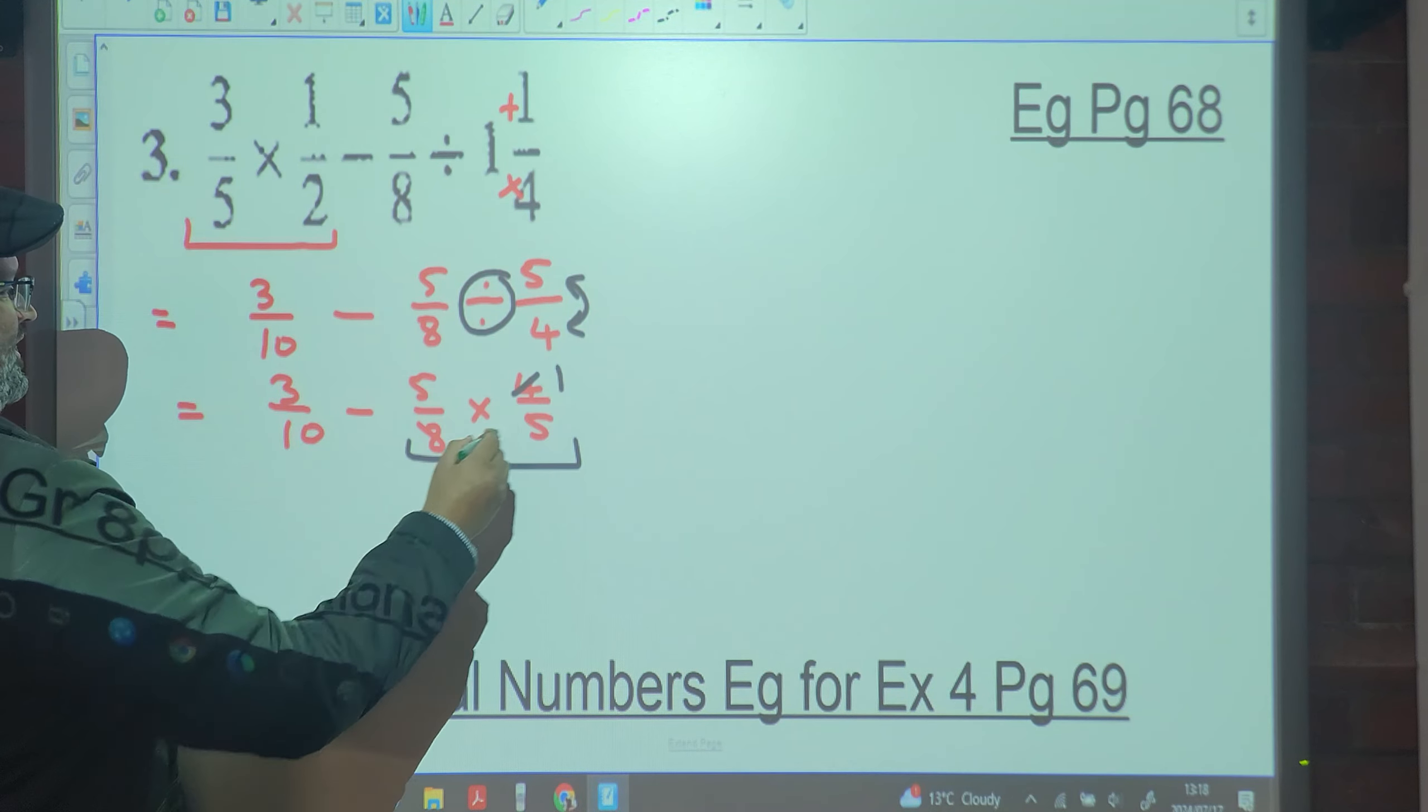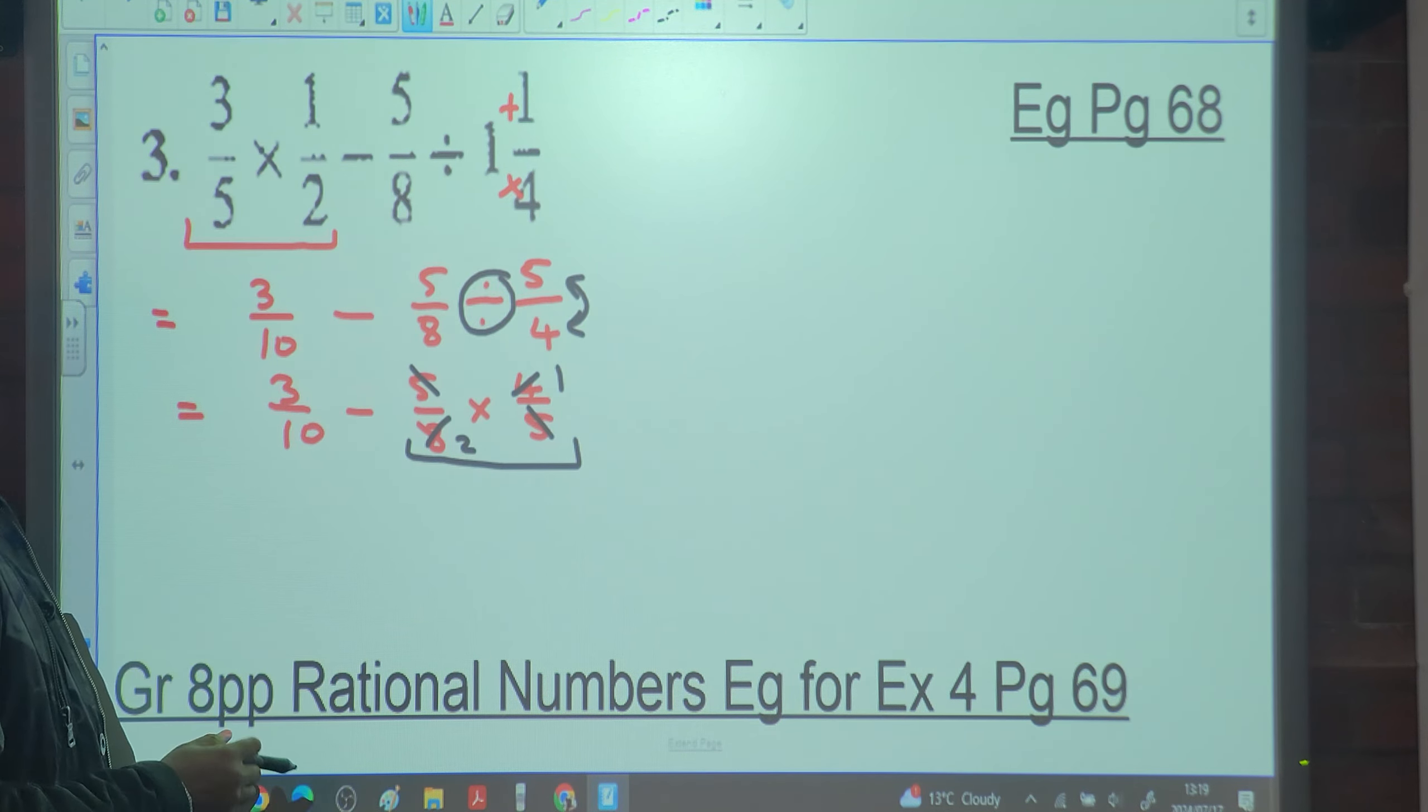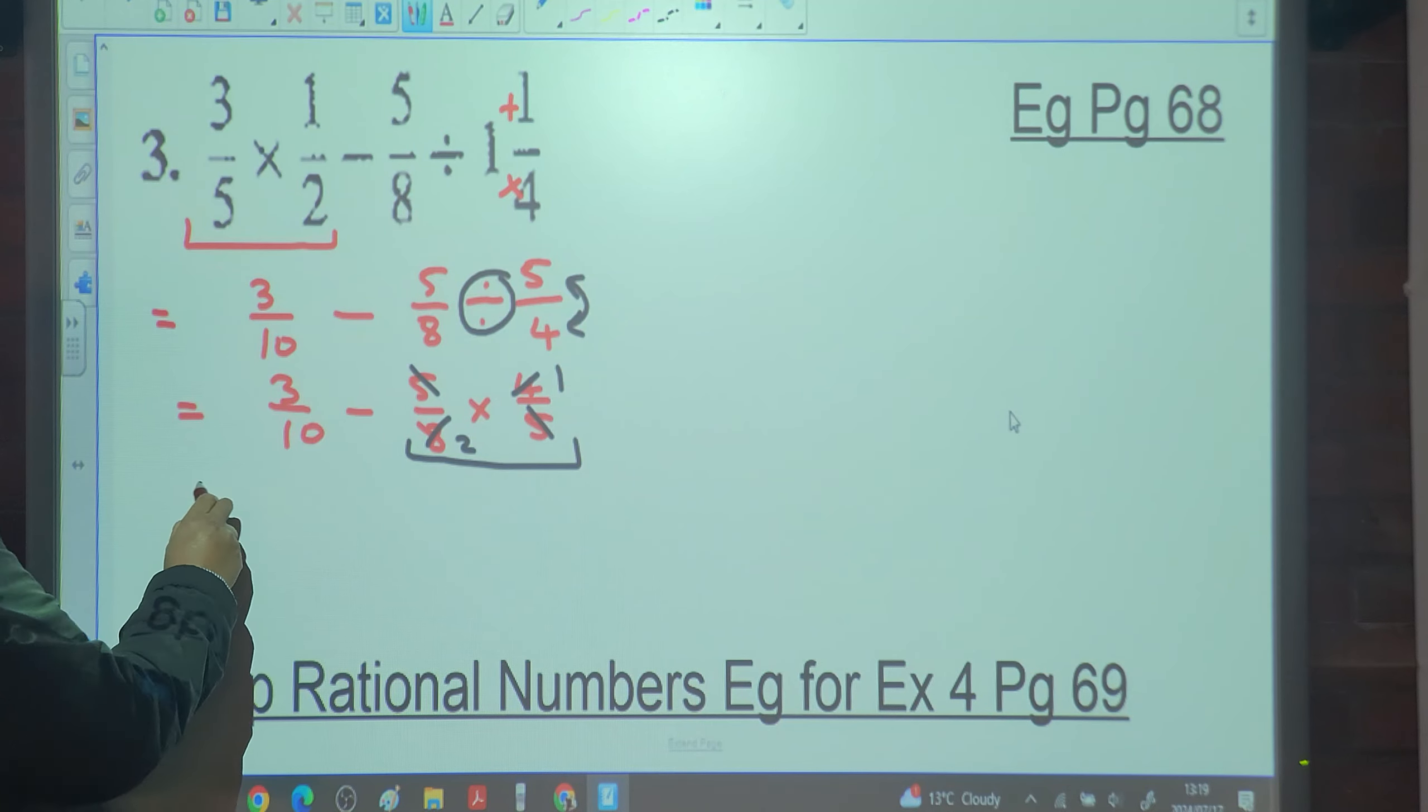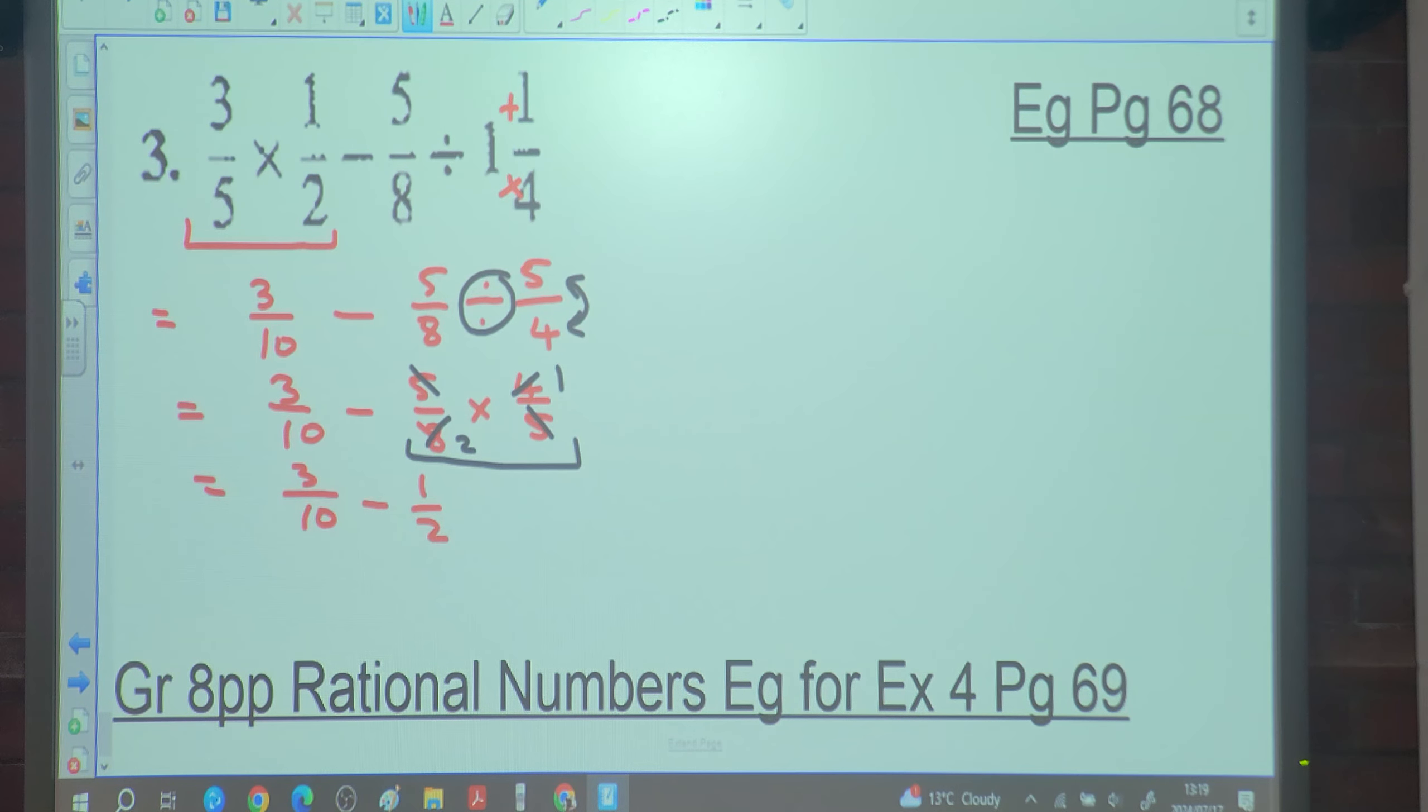Now what? Next one of the last one. The second one. So this has to be done first. Four going into four once, four going into eight twice. Five cancels five. So what are we left with? Three over ten minus one over two.